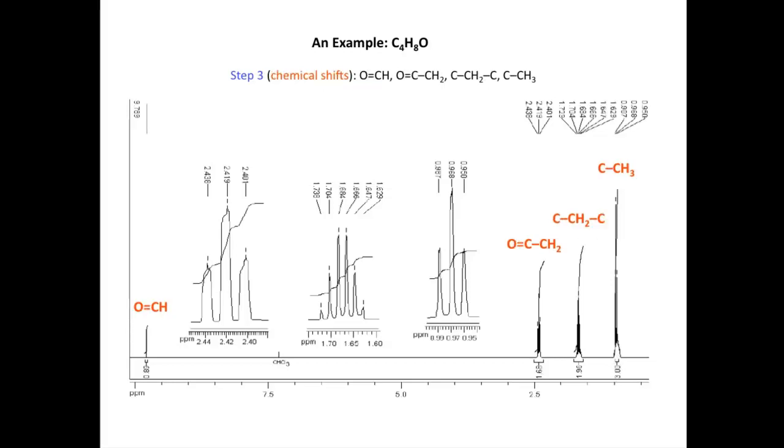In step three, we're going to use chemical shifts now to identify fragments or partial structures that could be present within the molecule. If we look at the highest chemical shift value first, this one up towards 10 ppm, that's characteristic for an aldehyde hydrogen. If we look at the signal towards 2.5, that's characteristic for a CH2 adjacent to a carbon R. Near two, it's characteristic for an alkane CH2 in between two saturated carbons.